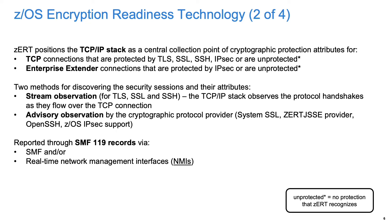ZERT is a function of the TCPIP stack that monitors and collects cryptographic protection attributes for all your TCP and enterprise extender connections. For TCP, we recognize TLS, SSH, IPsec, and unprotected traffic. Note that if a connection is protected in any other way that ZERT doesn't recognize, we report it as unprotected traffic. For enterprise extender, the only way to protect this traffic on ZOS is via IPsec, so we recognize both IPsec and unprotected.